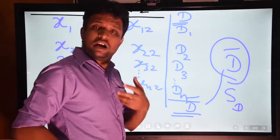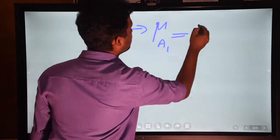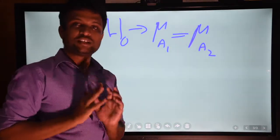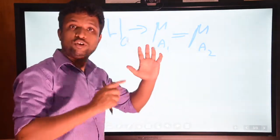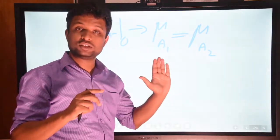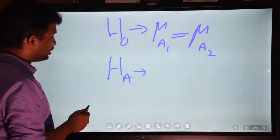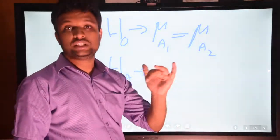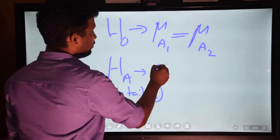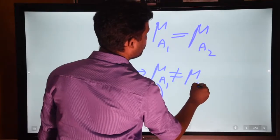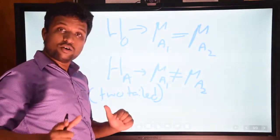Now let's see how to do hypothesis testing. Our null hypothesis is mu A1 equals mu A2. Please watch the lectures on null hypothesis, p-value, and sampling distribution before this video if you haven't already. The alternative hypothesis depends on whether it is a one-tail or two-tail case. This time we will go for the two-tail case, so the alternative hypothesis is mu A1 does not equal mu A2. The difference can be either towards the lower side or towards the higher side.